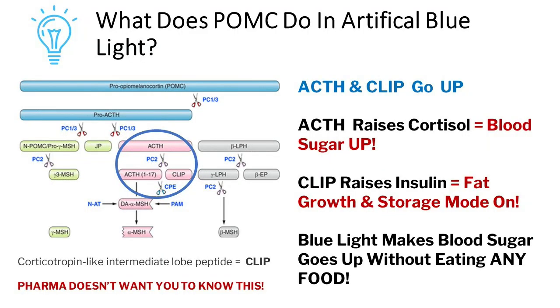When we're indoors under just artificial blue light — without the UVA, UVB, or red light, such as from screens, ceiling LEDs and similar sources — the way POMC is chopped up is different because it's not a natural signal. What happens is there's more chopping up of POMC into ACTH, which means you're going to produce more cortisol. That's not a bad thing if it's at the right time, but if you're producing cortisol all day long and in the evening because you're under blue light, that's not good at all.